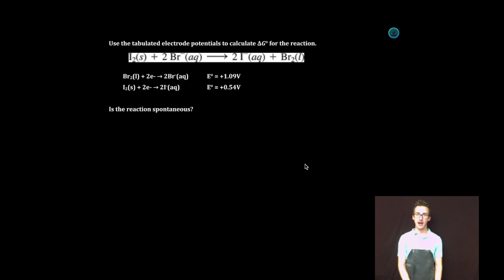All right, let's take a look now at a couple of quick problems that'll have us practice relating cell potential to Gibbs free energy change. Our first question, use the tabulated electrode potentials to calculate delta G for the reaction. Here are our reduction potentials. We want to know, is the reaction spontaneous?